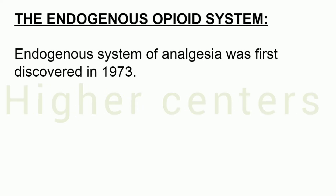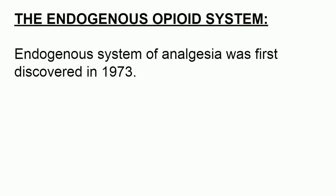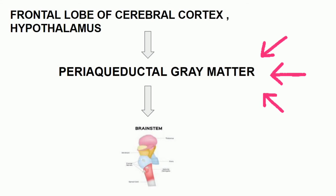From the higher centers, pain descends from the lower centers via the descending pathway, which is also called the endogenous opioid system. From the higher center — that is, the frontal lobe of the cerebral cortex and hypothalamus — it descends to the peri-aqueductal gray matter.